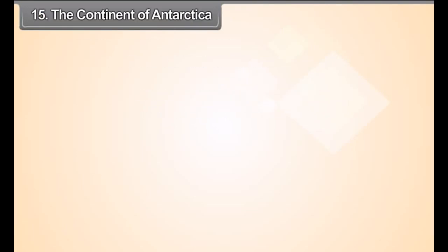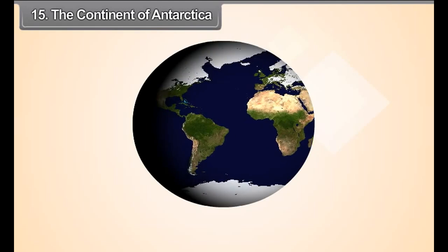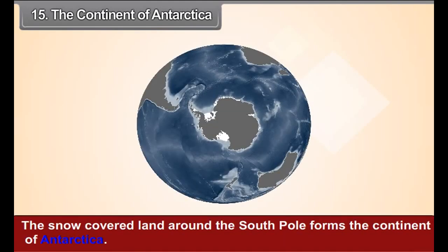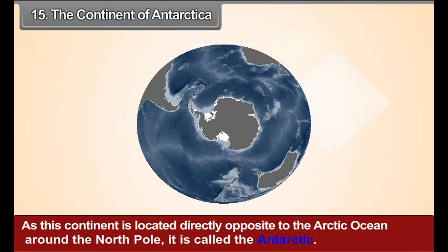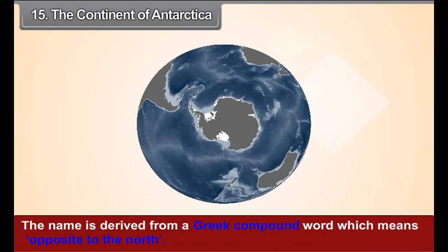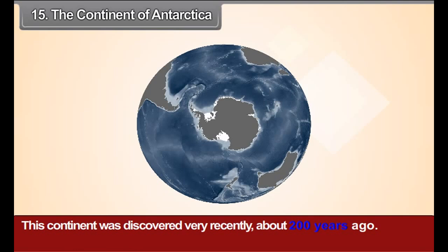Chapter 15: The Continent of Antarctica. The snow-covered land around the South Pole forms the continent of Antarctica. As this continent is located directly opposite to the Arctic Ocean around the North Pole, it is called the Antarctic. The name is derived from a Greek compound word which means 'opposite to the North.' This continent was discovered very recently, about 200 years ago.